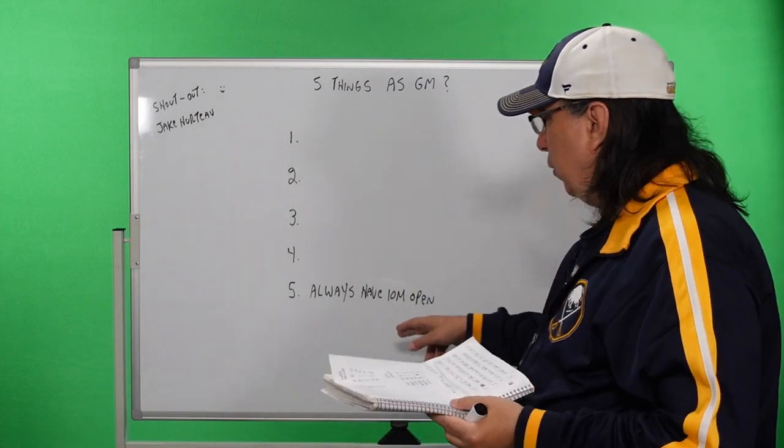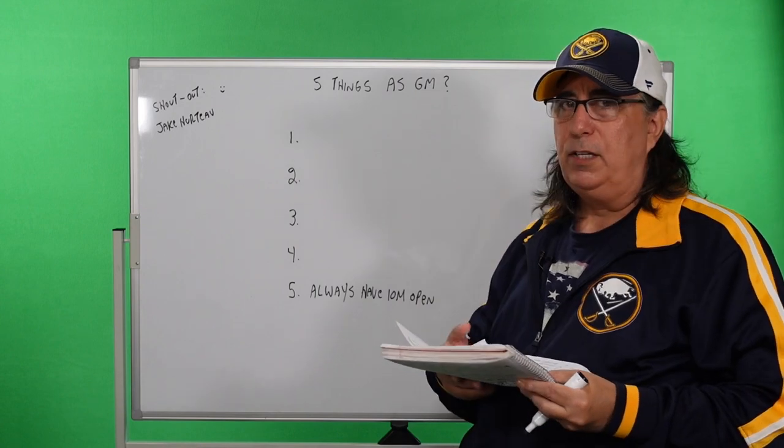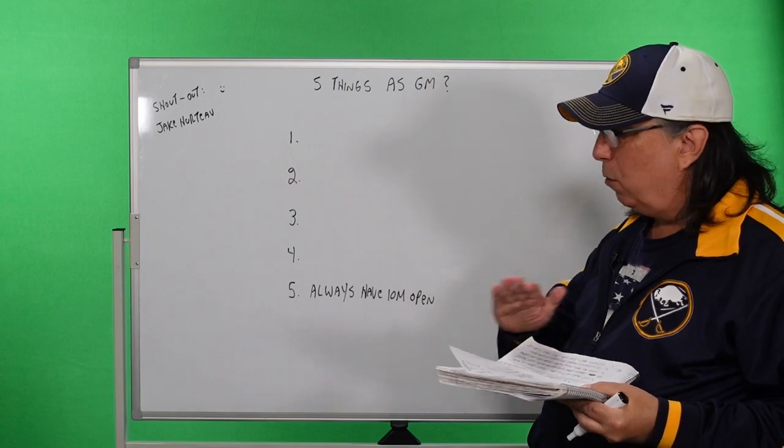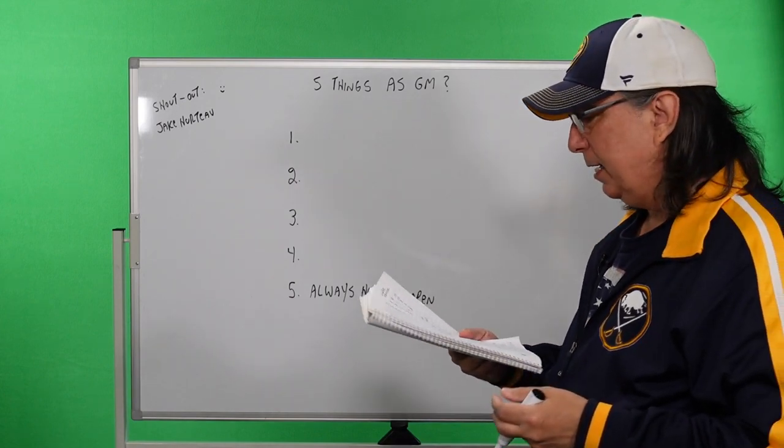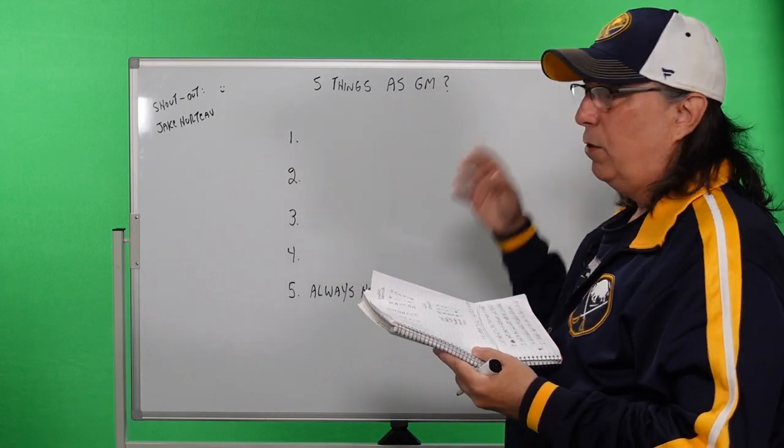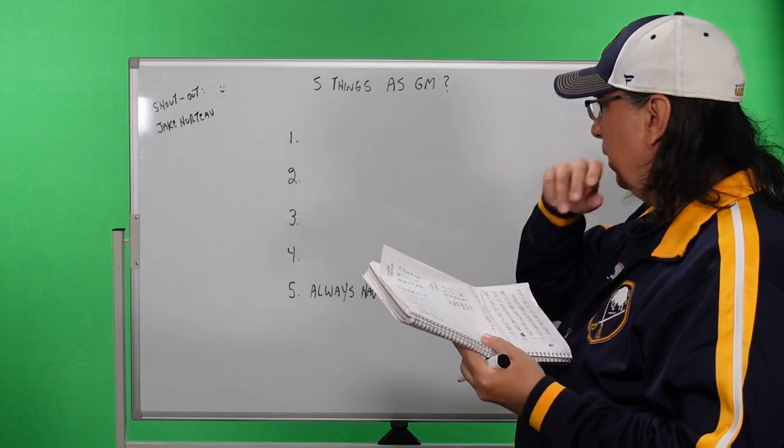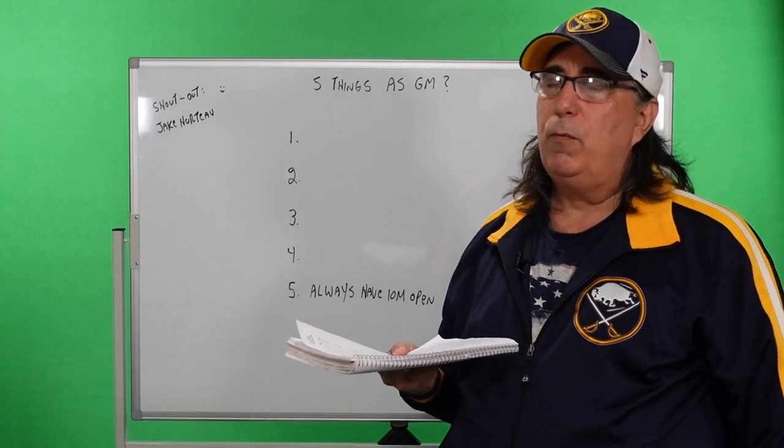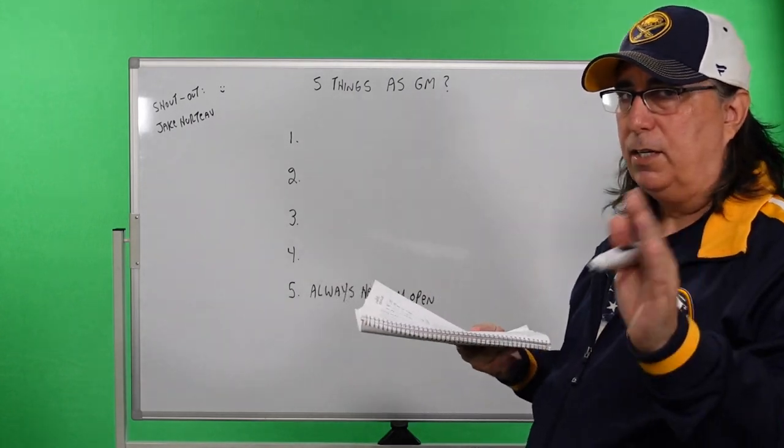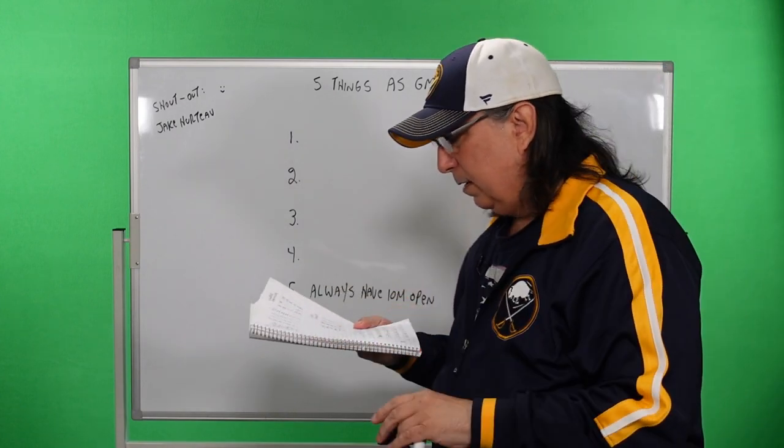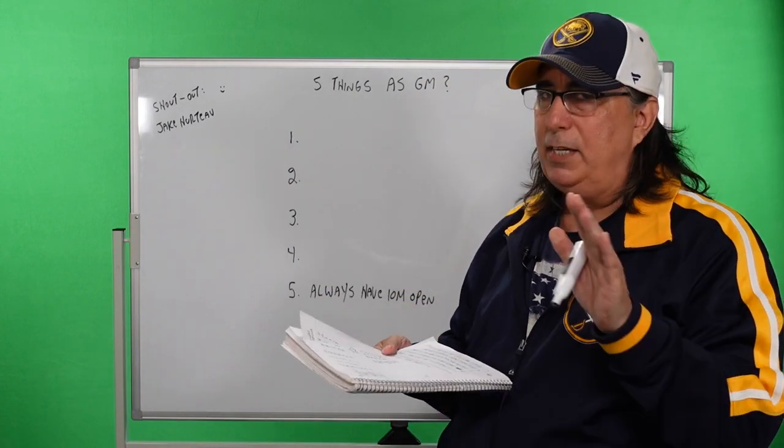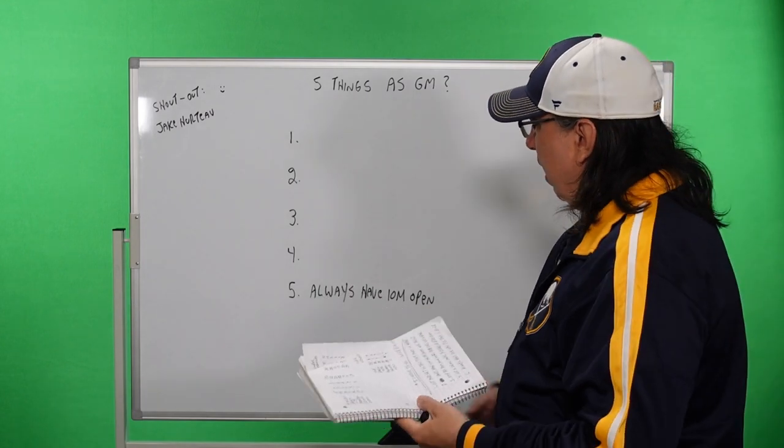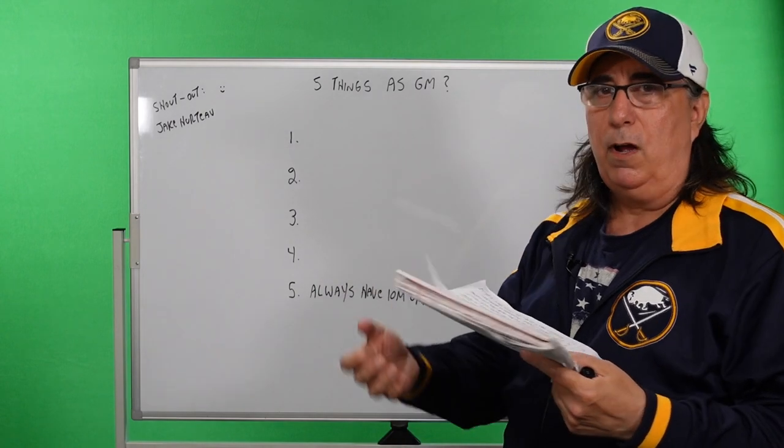I would make sure no matter how good things are going, if we overachieve, we always have $10 million of cap open, no matter what. We need that safety net because we have an owner that will let us spend it if we ever need to. And having that cash open is security, no matter what way you cut it.